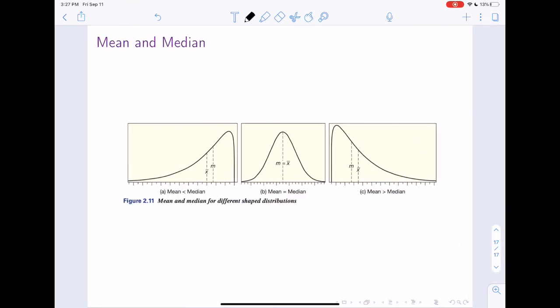This final slide is from your textbook. It just shows what I just showed you before. When the data is skewed to the left, the mean will be less than the median. When the data is skewed to the right, the mean will be greater than the median. And when the distribution is perfectly symmetric, the mean and the median will be the same.